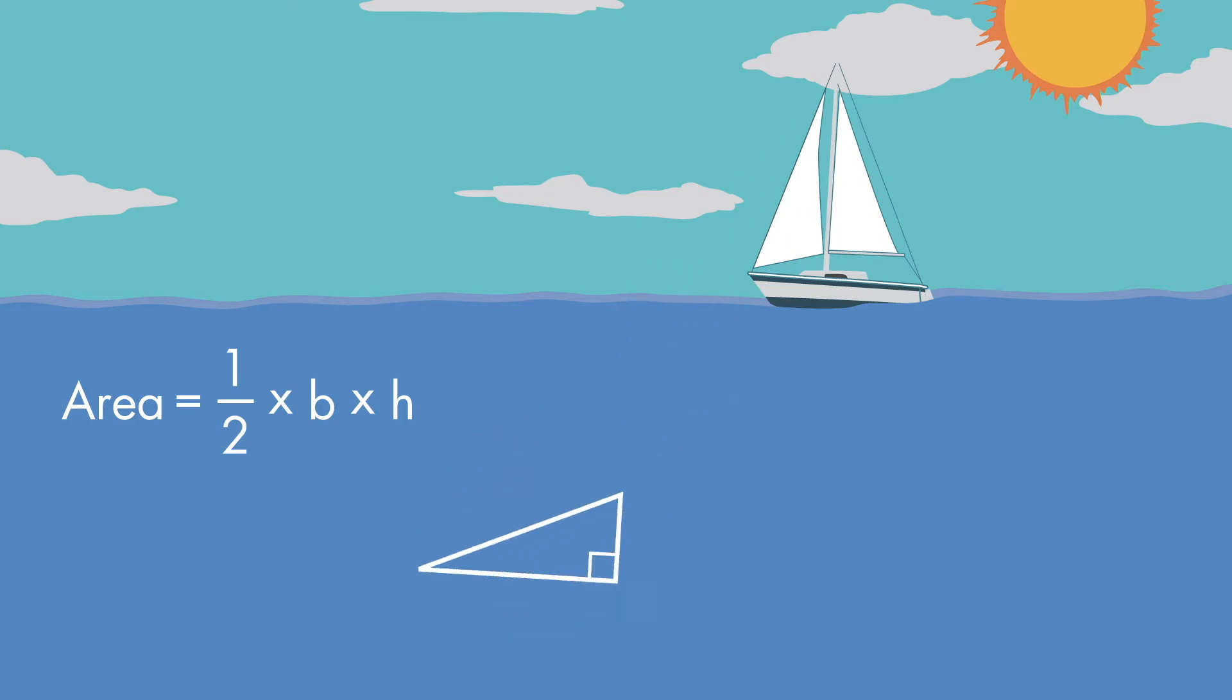We can choose any side to be the base. Here are the dimensions of our sail. The base is 10 feet and the height is 20 feet.